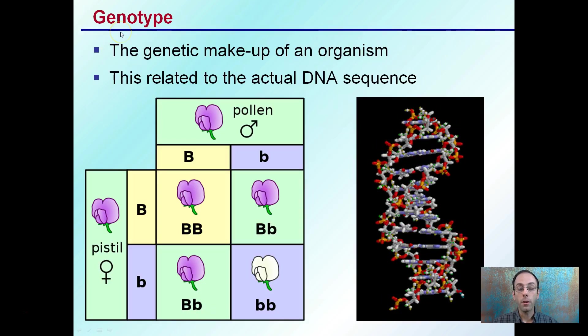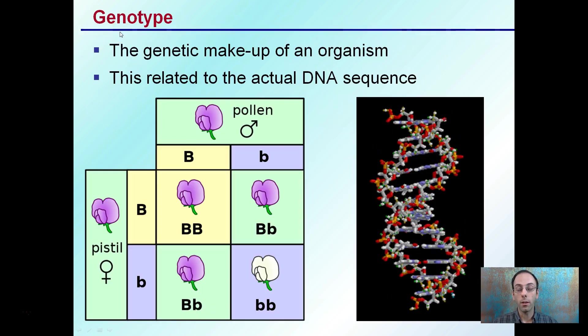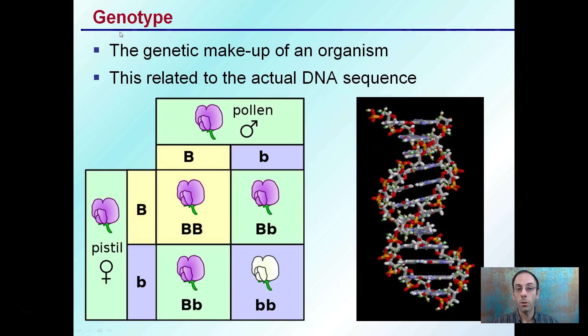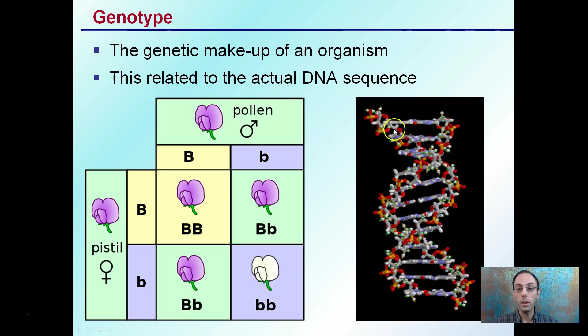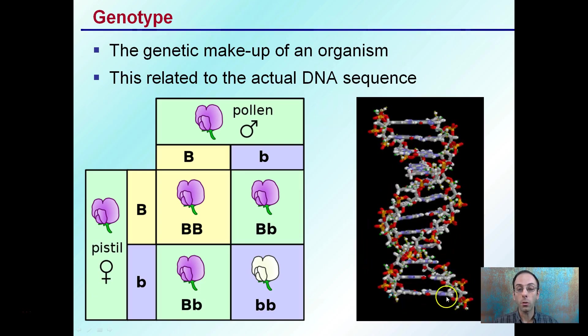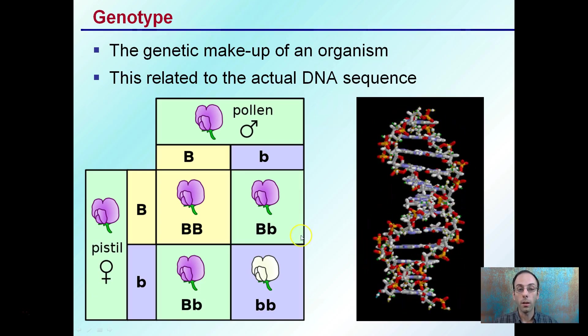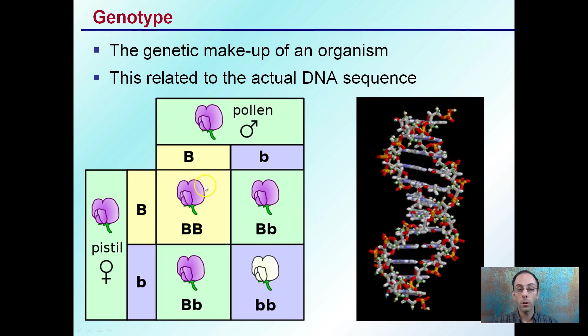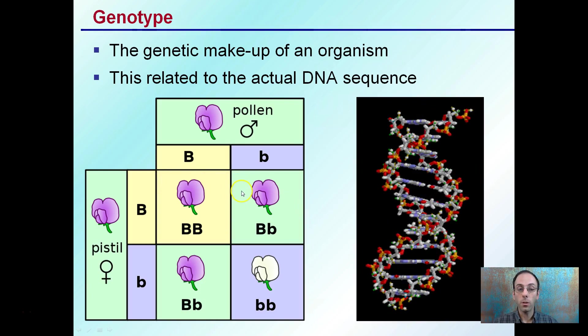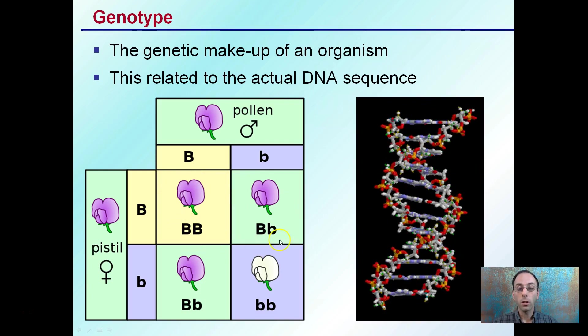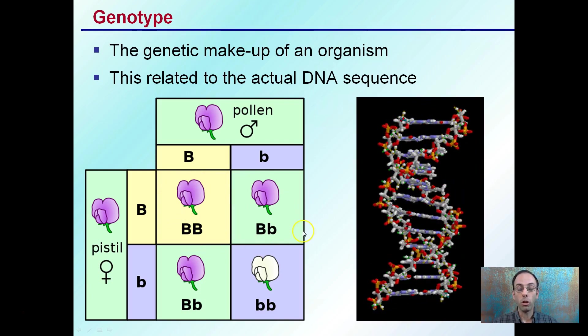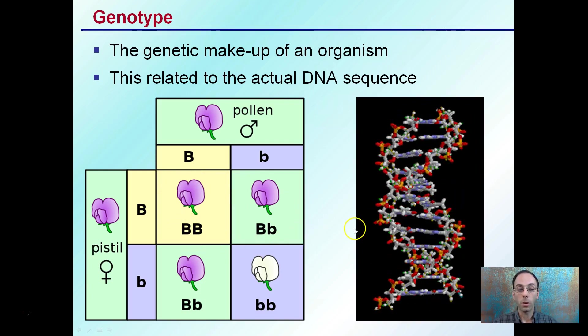Genotype is the genetics of the organism. It's referring to the actual DNA sequence, the actual double-stranded DNA sequence — not what it looks like, because that's phenotype. Genotype refers to the actual genetics of the organism.